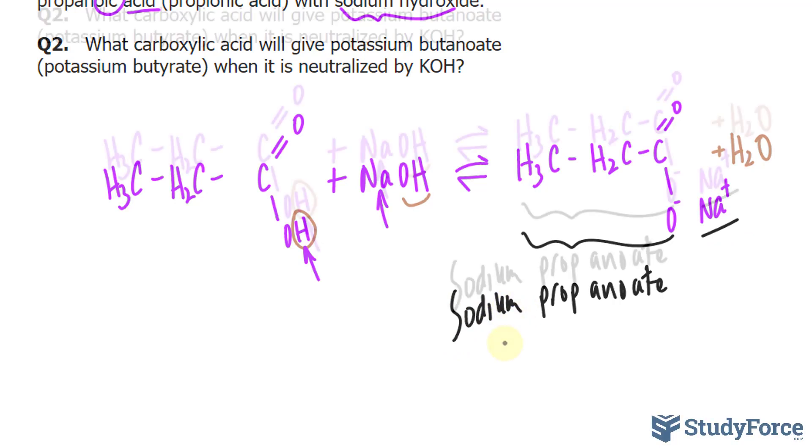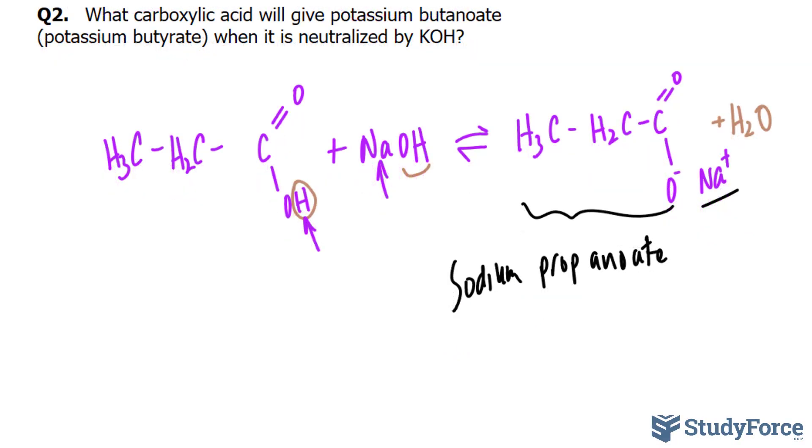Question two reads: what carboxylic acid will give potassium butanoate, or another common word is potassium butyrate, when it is neutralized by KOH?